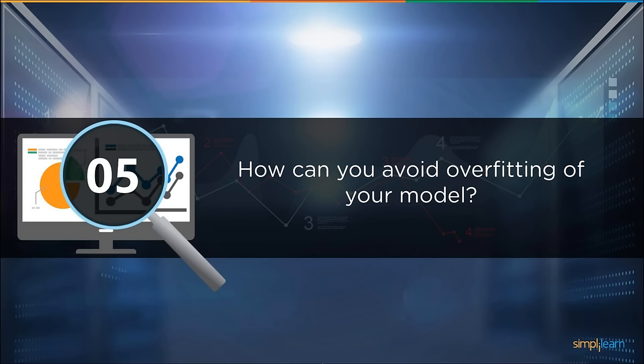You are given a dataset on cancer detection and built a classification model achieving 96% accuracy. Why shouldn't you be happy with your model performance? Cancer detection results in imbalanced data. In an imbalanced dataset, accuracy should not be used as the measure of performance, because it is important to focus on the remaining 4% — the people who were wrongly diagnosed. Wrong diagnosis is a major concern, as there can be people who have cancer but were predicted as not having it.